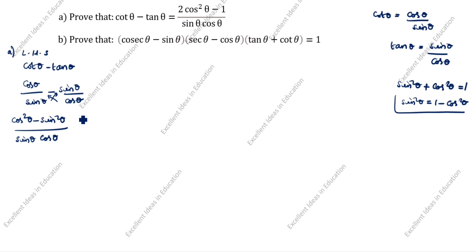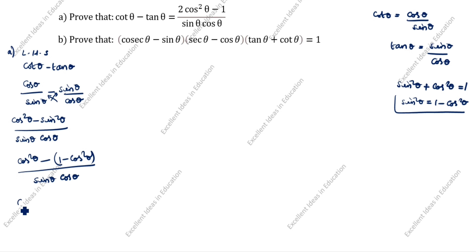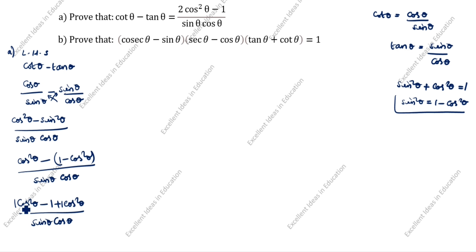Now we will apply this formula here. Next step: cos²θ minus, open bracket, 1 minus cos²θ, close bracket, divided by sin θ cos θ. Next step, we remove the bracket: cos²θ minus 1 plus cos²θ, divided by sin θ cos θ. You see here there is one cos²θ and also another cos²θ — add these two. What comes next? 2cos²θ minus 1, divided by sin θ cos θ.